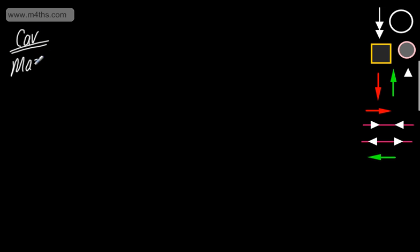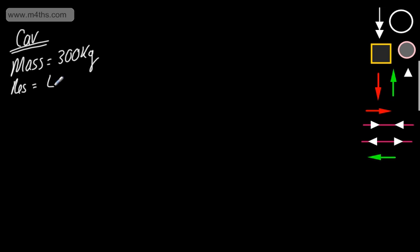We'll say the mass of the car is 300 kilograms. We're going to have resistance to motion, and we'll say the resistance to motion is going to be 400 newtons. We will have a driving force on the car, and we can say the driving force is going to be 5,000 newtons.